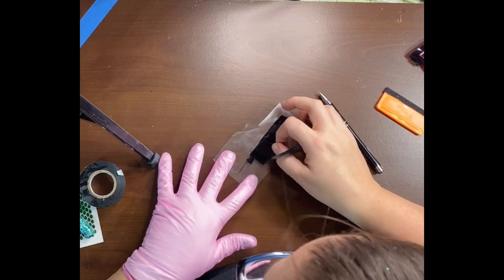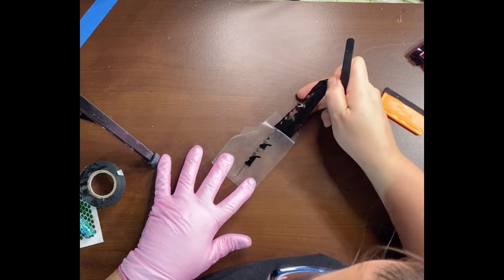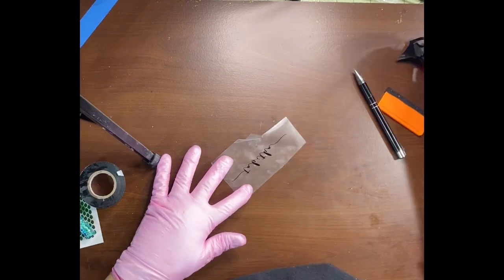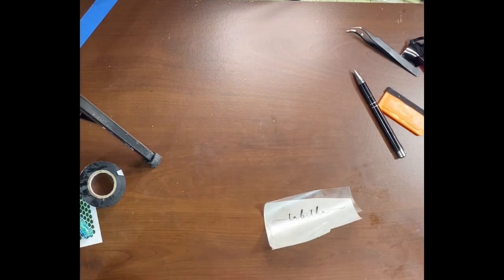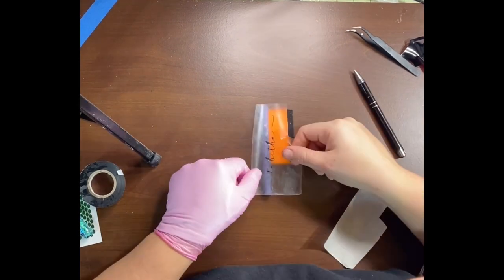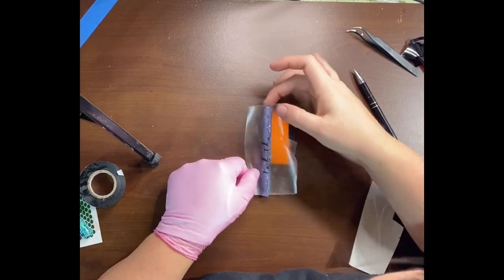When I reverse weed, I kind of just get the majority of the vinyl off so I know where I'm laying my vinyl. And then all the little details inside the loops of things, I weed out once it's on the object.